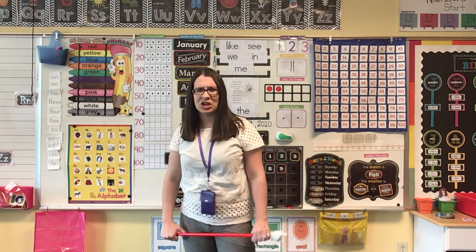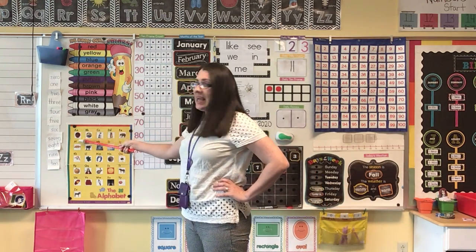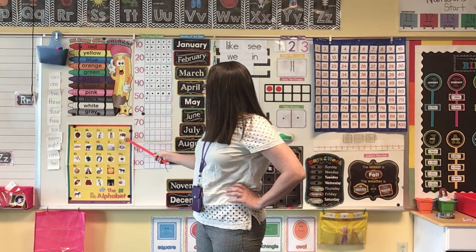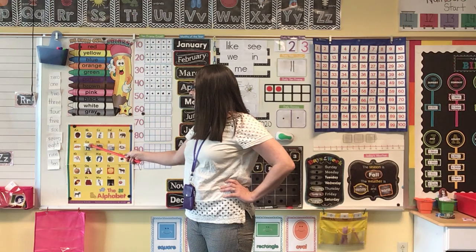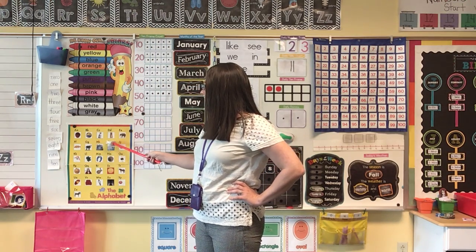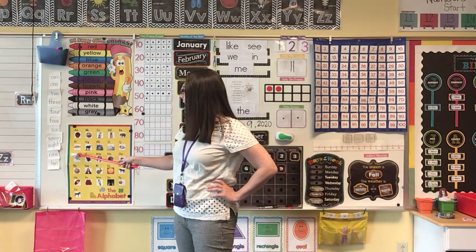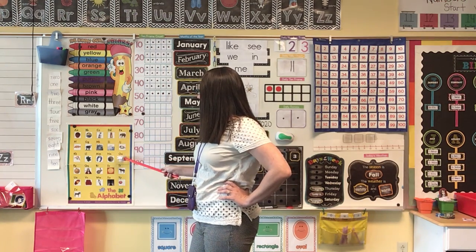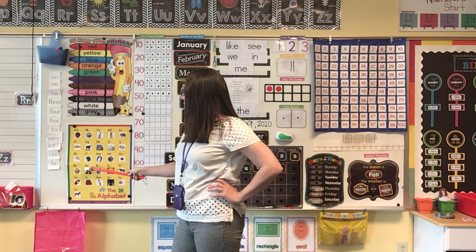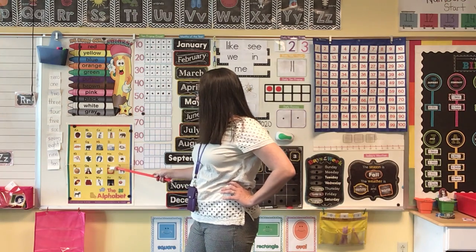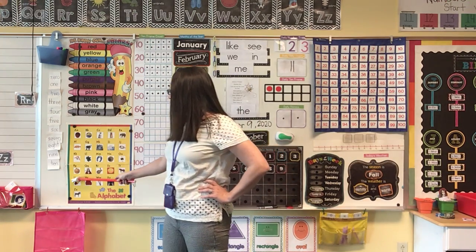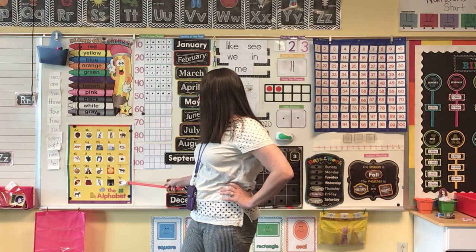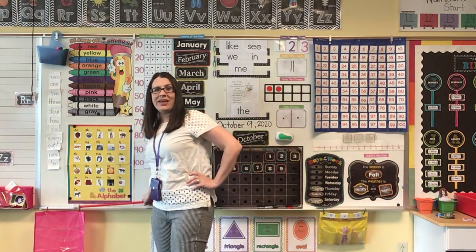Let's go ahead and read our ABC chart. Are you ready? A-A Apple, B-B Ball, C-C Cat, D-D Dog, E-E Elephant, F-F Fish, G-G Goat, H-H House, I-I Igloo, J-J Jump Rope, K-K Kite, L-L Leaf, M-M Magnet, N-N Nest, O-O Ostrich, P-P Pumpkin, Q-Q Queen, R-R Rabbit, S-S Sun, T-T Tiger, U-U Umbrella, V-V Vest, W-W Watch, X-X X-Ray, Y-Y Yo-Yo, Z-Z Zebra, and that's it for our calendar today.